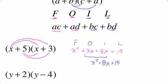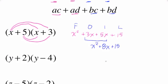Now when you get used to doing these, you won't actually have to write out FOIL. You won't actually have to write out a 3X and a 5X. You'll just add that in your head and you'll write out an 8X.